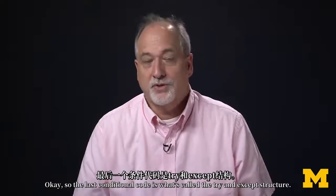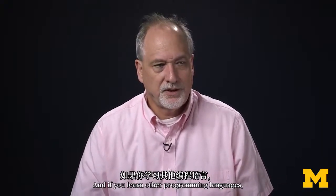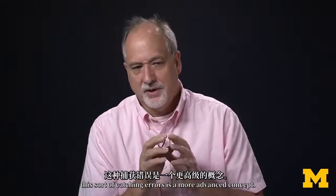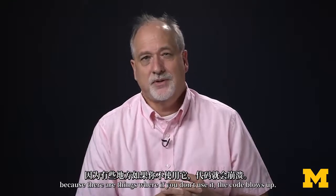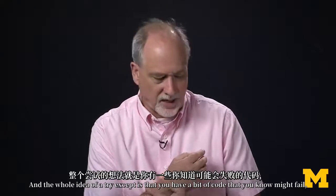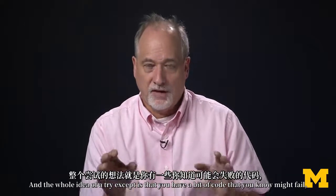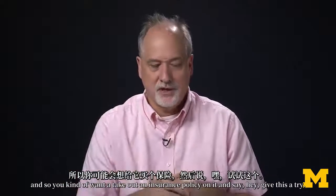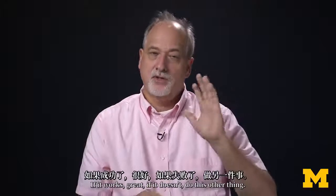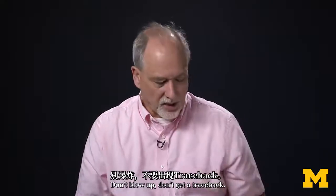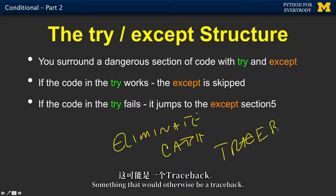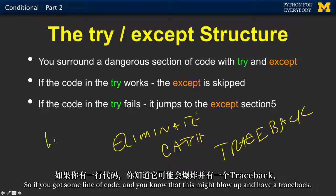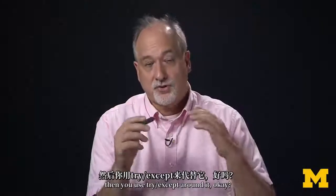The last conditional code is what's called the try and except structure. If you learn other programming languages, this sort of catching errors is a more advanced concept. But in Python, we tend to have to use it earlier because there are things where, if you don't use it, the code blows up. The whole idea of a try except is that you have a bit of code that you know might fail. And so you kind of want to take out an insurance policy on it and say, hey, give this a try. If it works, great. If it doesn't, do this other thing. Don't blow up. Don't get a traceback.